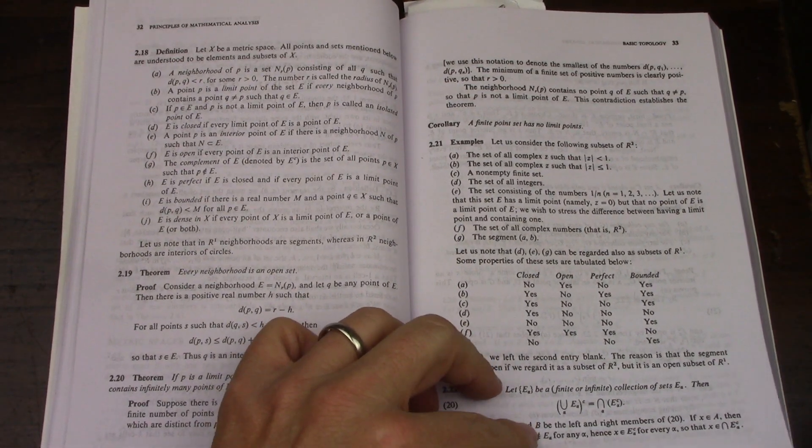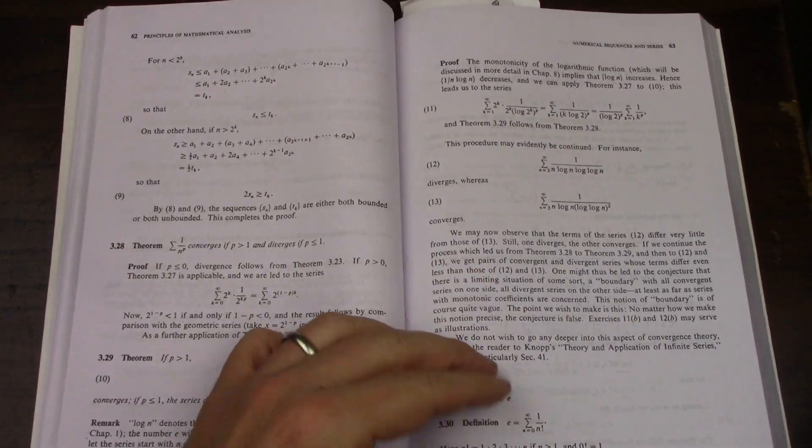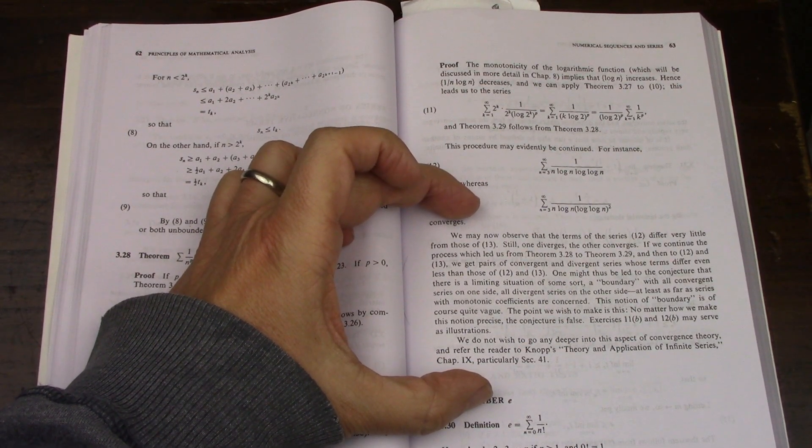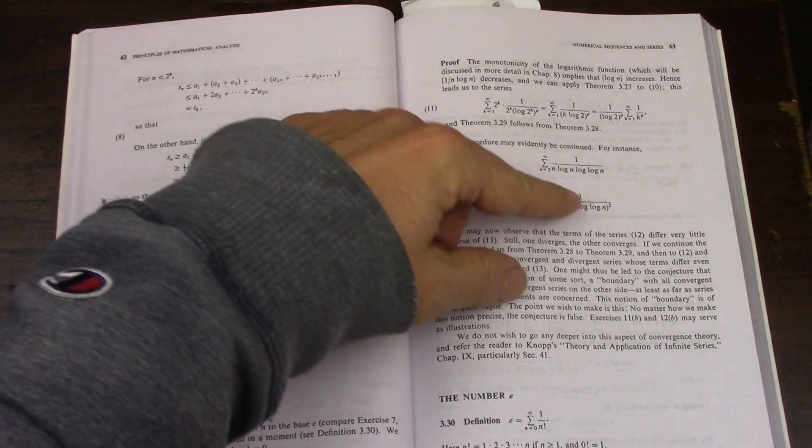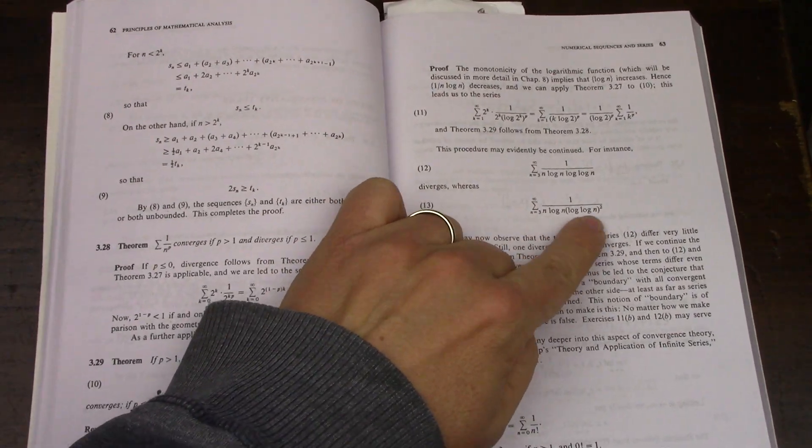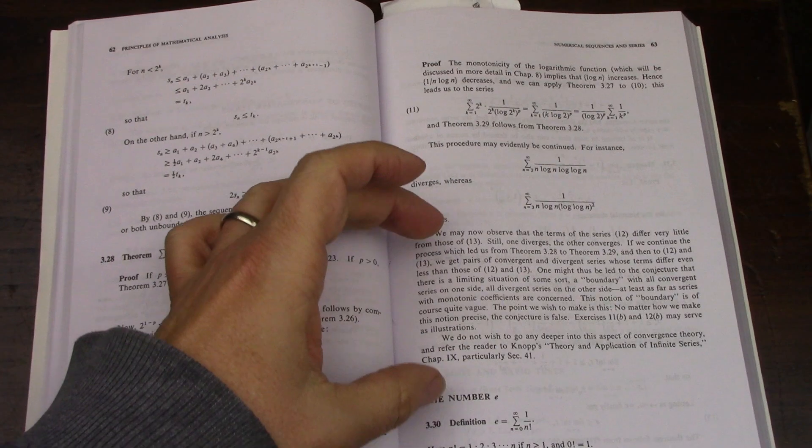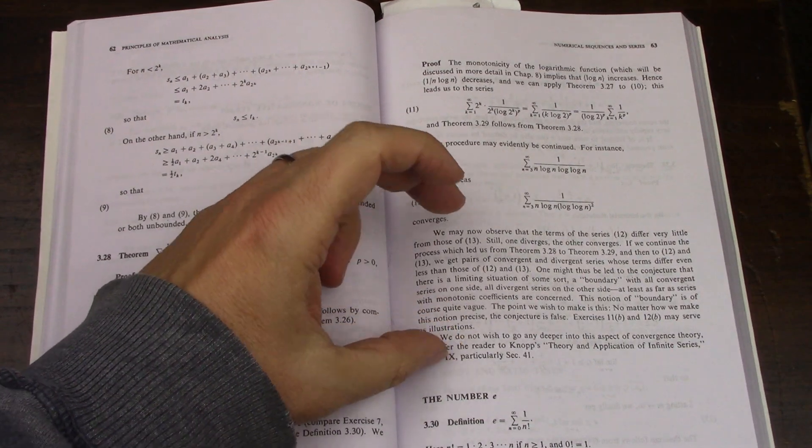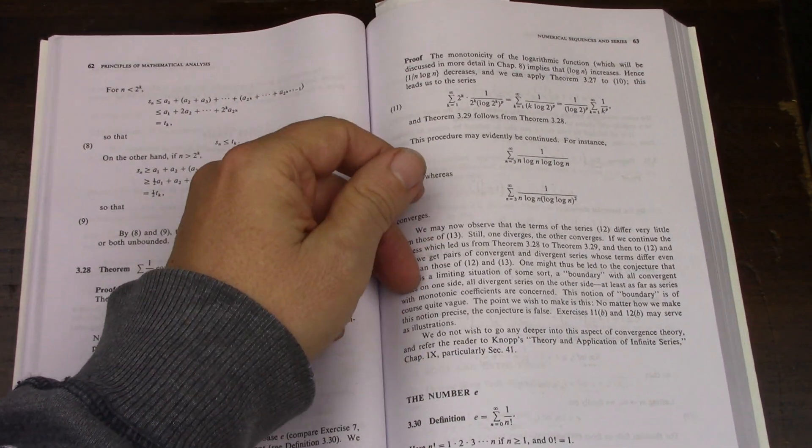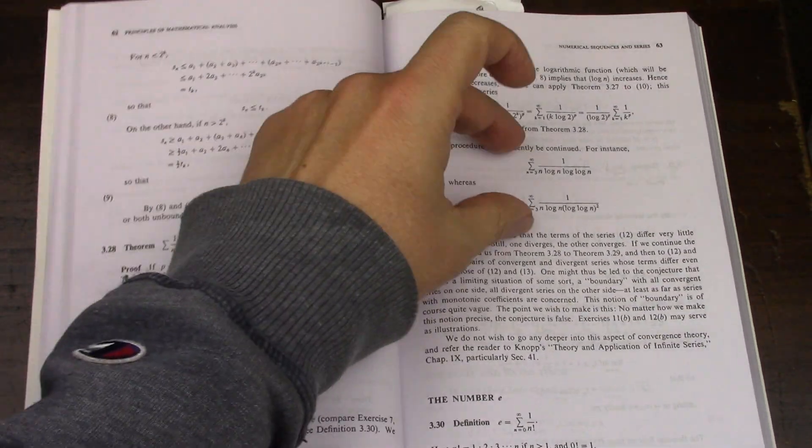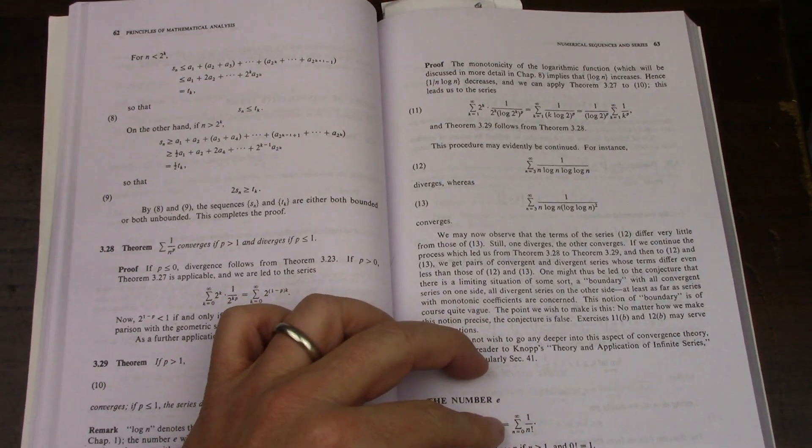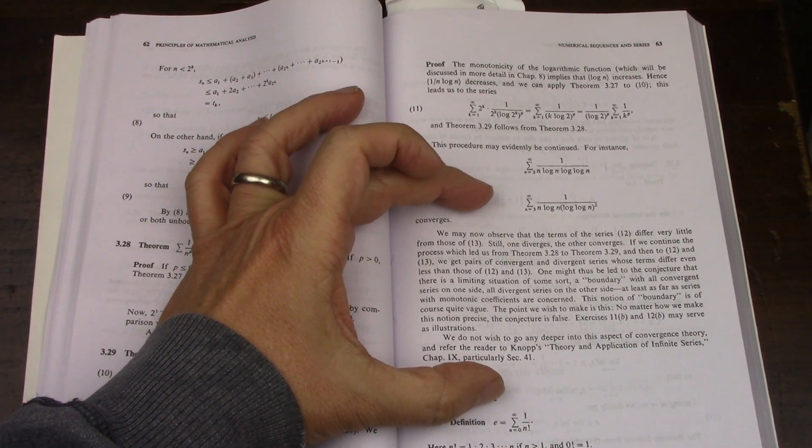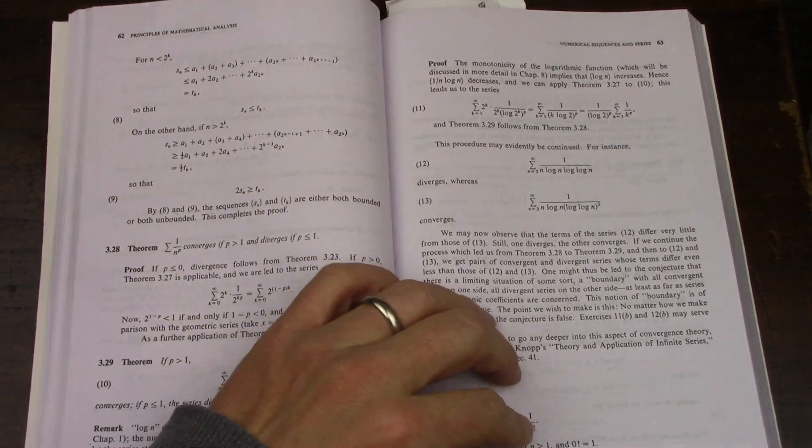So then if we go, say for example, to page 63, this paragraph is fantastic. This is Rudin at his best, where he explains how when you put an extra square in here for log log n, you get a different, you get some, you get, you don't get divergence, right? So, but the difference between diverging and not diverging is not crystal clear, it depends on the situation, and he has a really good example to explain it. I love this paragraph. When I read this I was like, okay, clearly you are the man, thank you.